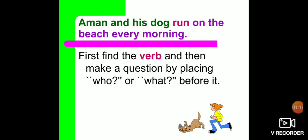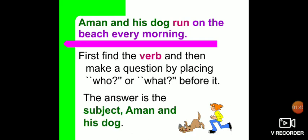In this sentence, the verb is 'run'. So now we will frame a question using this verb. We will either use who or what before the verb to frame a question. So we have framed the question: 'Who run?' The answer is Aman and his dog. So Aman and his dog is your subject.